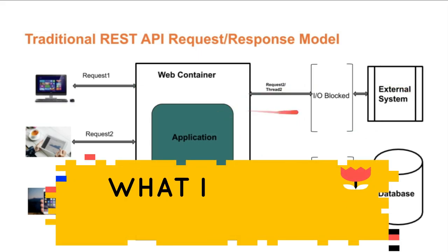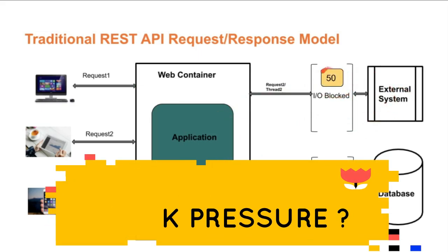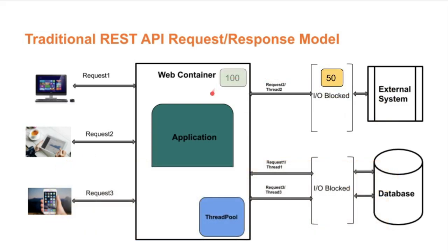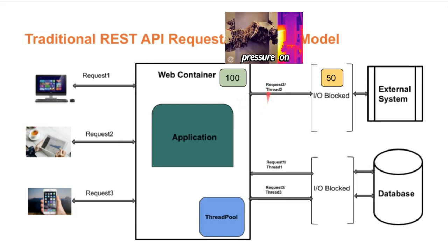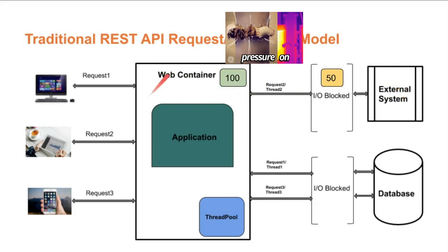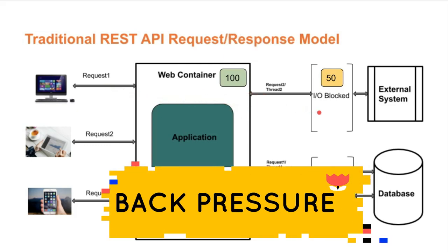So what is back pressure? For example, if this external system can handle only 50 requests per second and this system can handle 100 requests per second, as the number of users increases, the requests also increase. Since it's a synchronous call waiting for the response for IO blocked calls, back pressure will build up because the number of threads here is more but the number of threads to handle in the external system is less. So when requests to the system grow, back pressure builds — this is a critical situation, and this whole scenario is called back pressure.